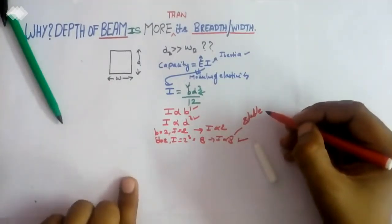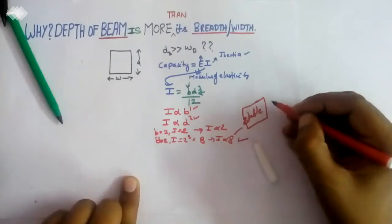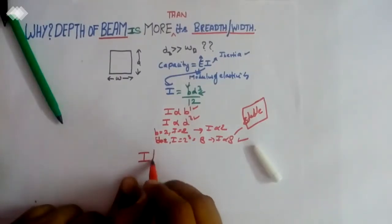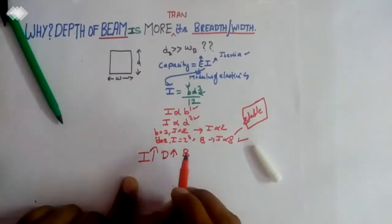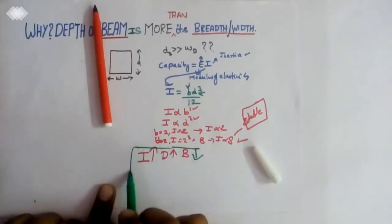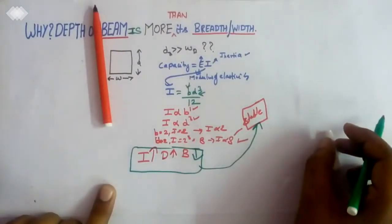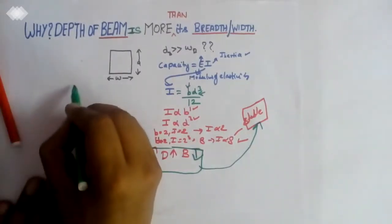Due to large depth, the beam is more stable. We are increasing the moment of inertia, so we have to increase the moment of inertia by increasing the depth and decreasing the breadth of the beam. This concept will make the beam stable and strong.